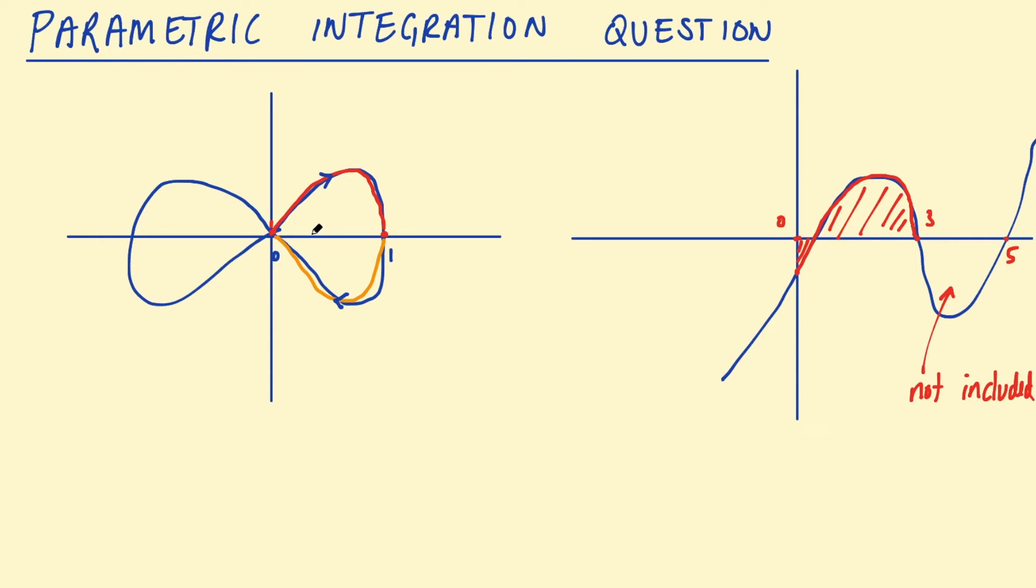So even though in that interval we think that all of that part of the curve is included in that interval, really when we go from 0 to 1 we're actually drawing out this part of the curve above the x-axis. Going back from 1 to 0 then we draw out the rest of the curve below the x-axis.